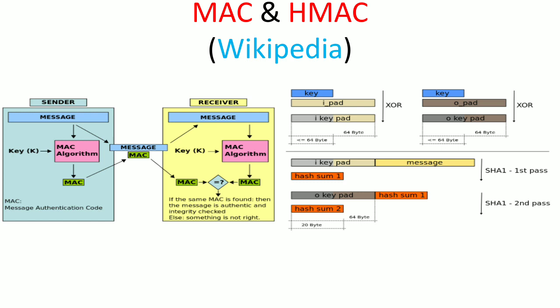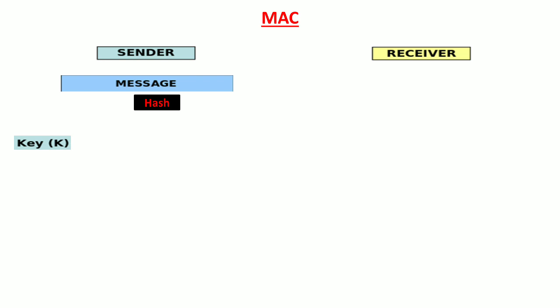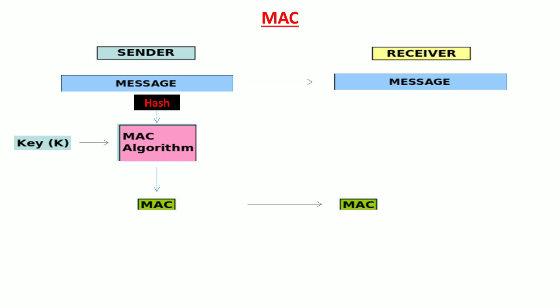In this video I will discuss both of these codes using animation. First, message authentication code: a sender wants to send a message to a receiver in a way that the receiver can be confident about the origin of the message and that the message has not been changed during transit. The sender takes the message and hashes it, then uses a key — this key and the hash of the message are combined in a MAC algorithm to generate the message authentication code, also called the tag.